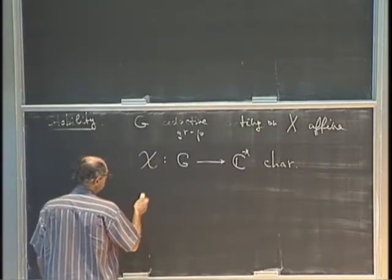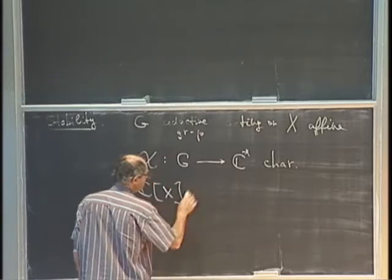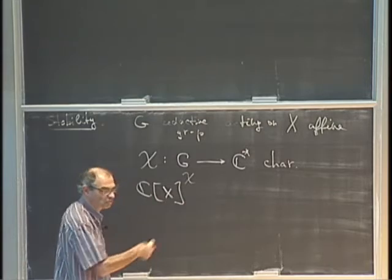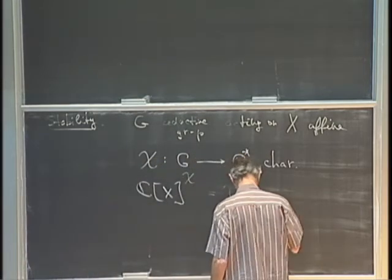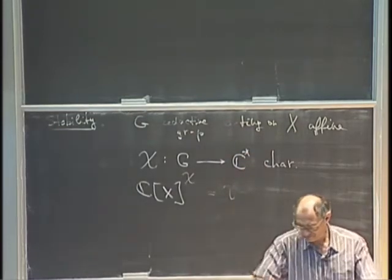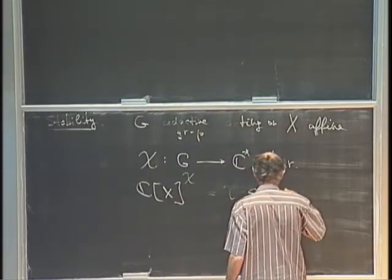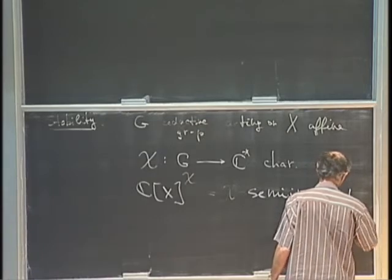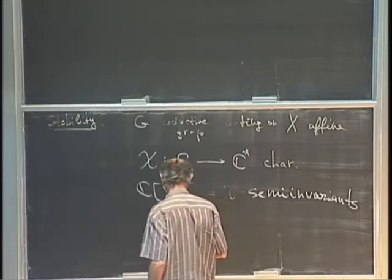One looks at the coordinate ring of X and defines chi semi-invariance — these are functions on X which transform according to this character. You can also look at the character chi to the N for any integer N, and this is also a character.